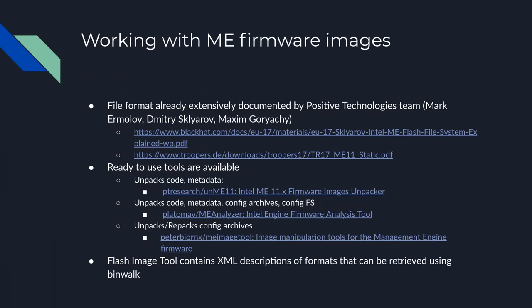If you want to get started working on ME firmware, want to reverse engineer or modify it, first you've got to deal with the image file. You've got your SPI flash — most of the firmware lives in the same flash chip as your BIOS. There are tools already extensively documented by others; you can just download a tool and run it against the image. Before these tools were around, you couldn't get to all the code — the kernel was compressed using Huffman tables stored in ROM, and you couldn't get to the ROM without code execution.